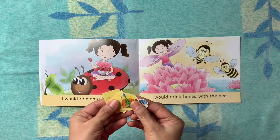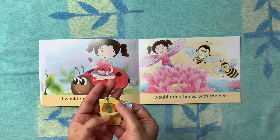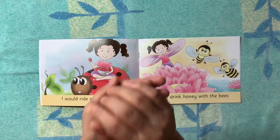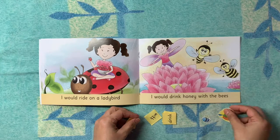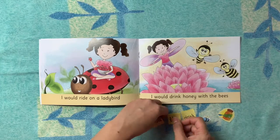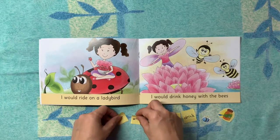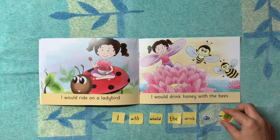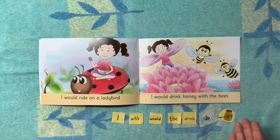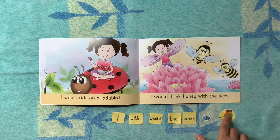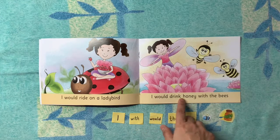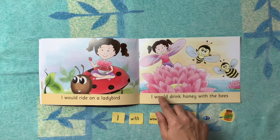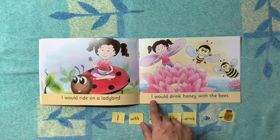Right now I have word flashcards and picture cards with me. So I am going to mix them up and then put them on the table. As you can see, all the flashcards are jumbled. Now we will look at the words and pictures and match them with the words in the book, and try to form a sentence by matching both of them.